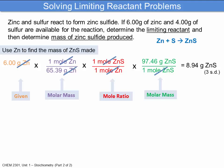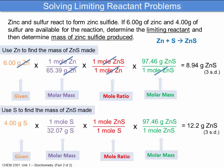We can then do the same thing for the sulfur. Starting with 4.00 grams of sulfur, we multiply by the molar mass to get moles of sulfur, use the mole ratio to convert to moles of zinc sulfide, then multiply by the molar mass of zinc sulfide. Again going to 3 significant digits, because sulfur's 4.00 grams has 3 significant digits, we end up with an answer of 12.2 grams of zinc sulfide.